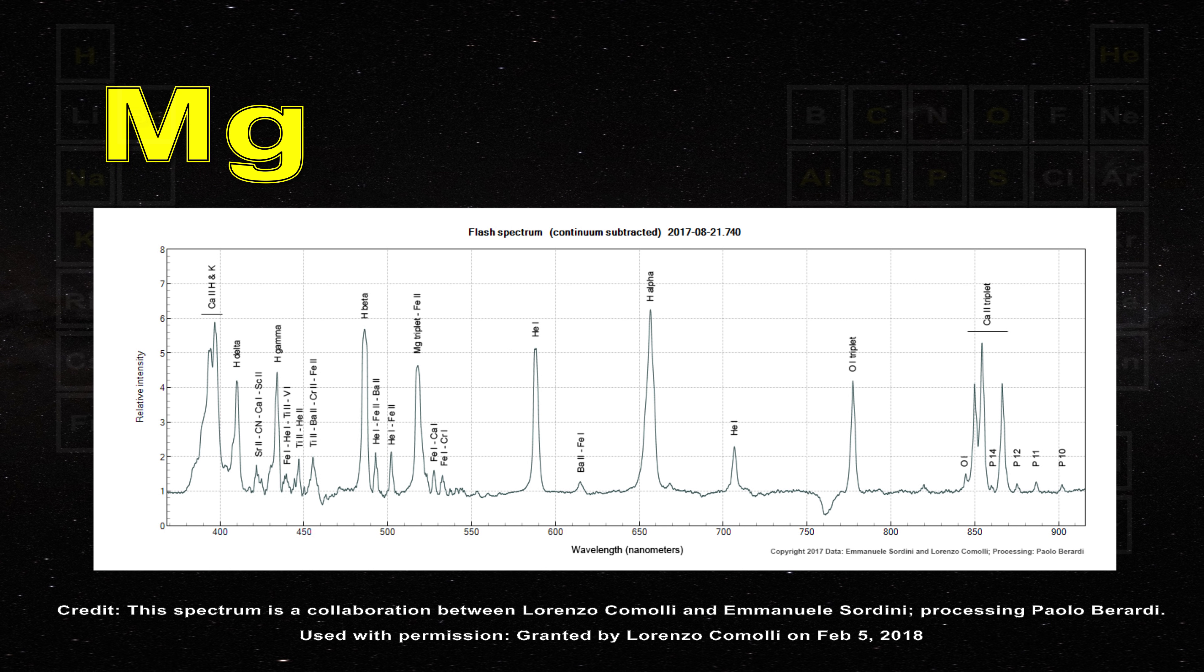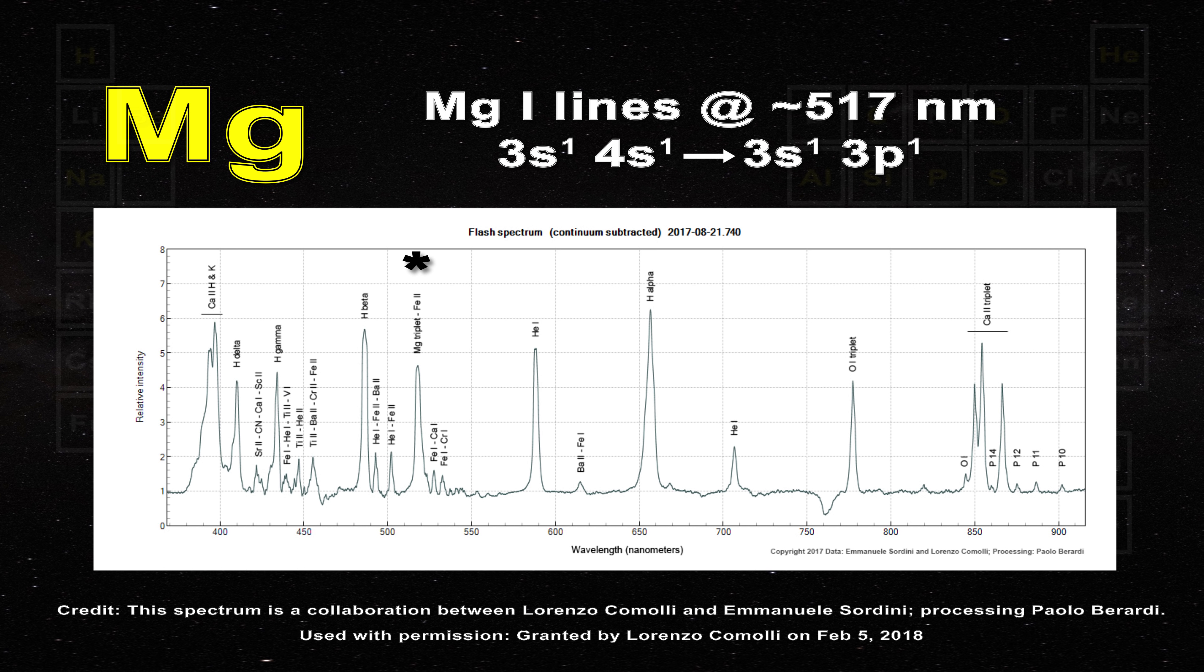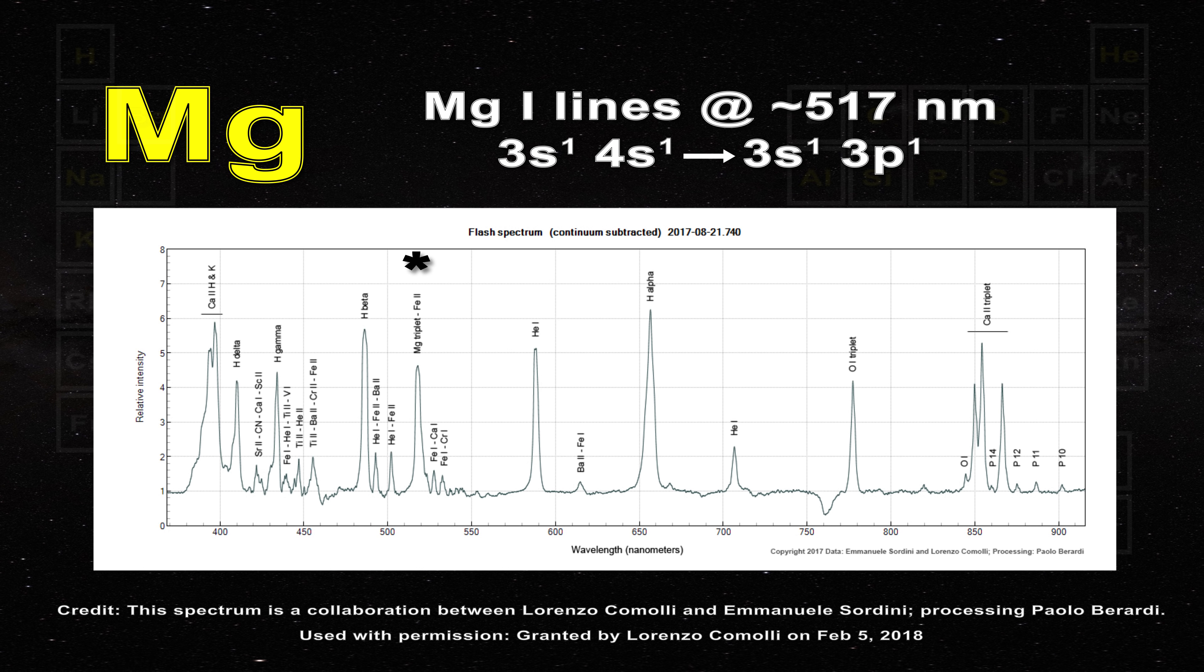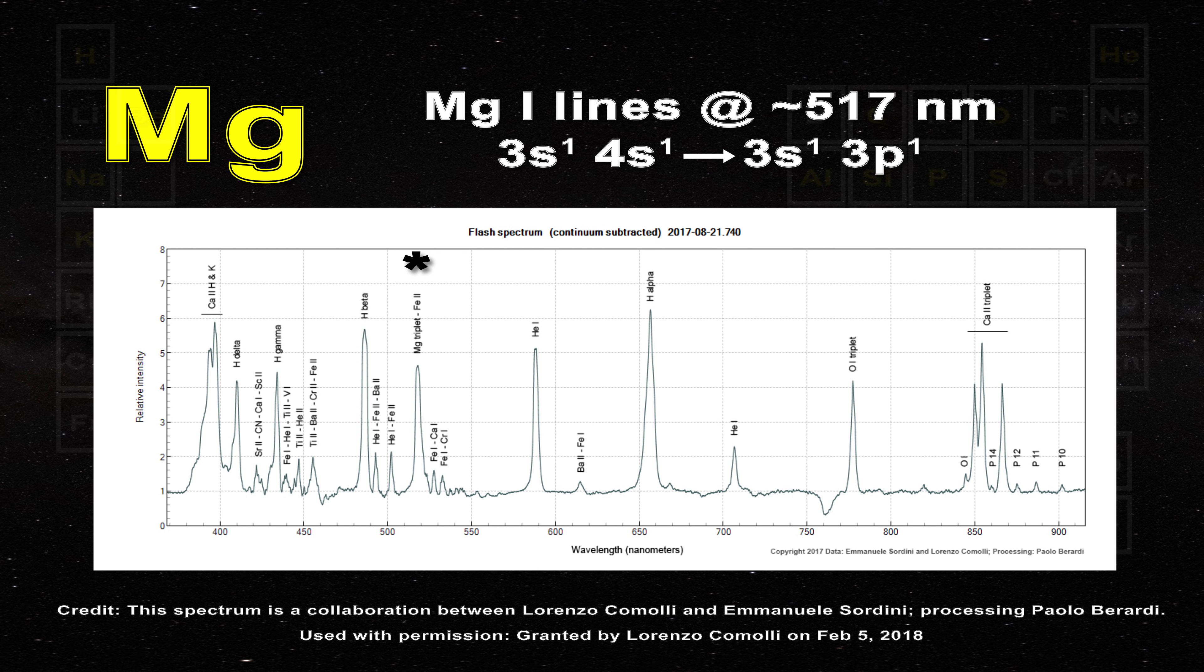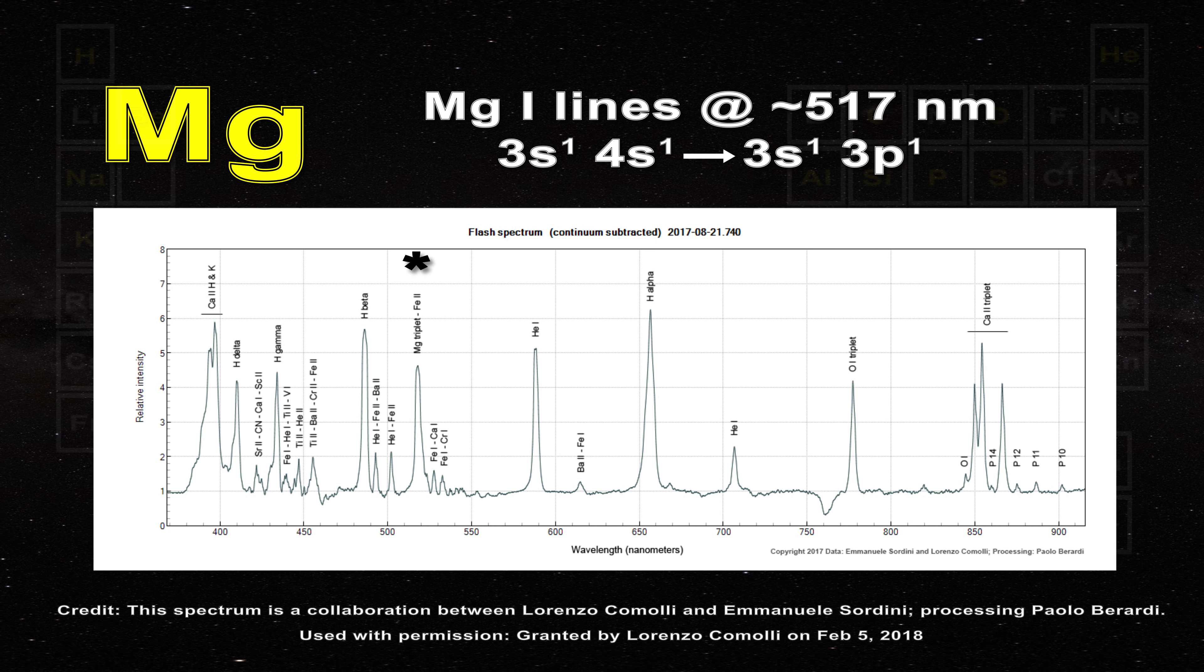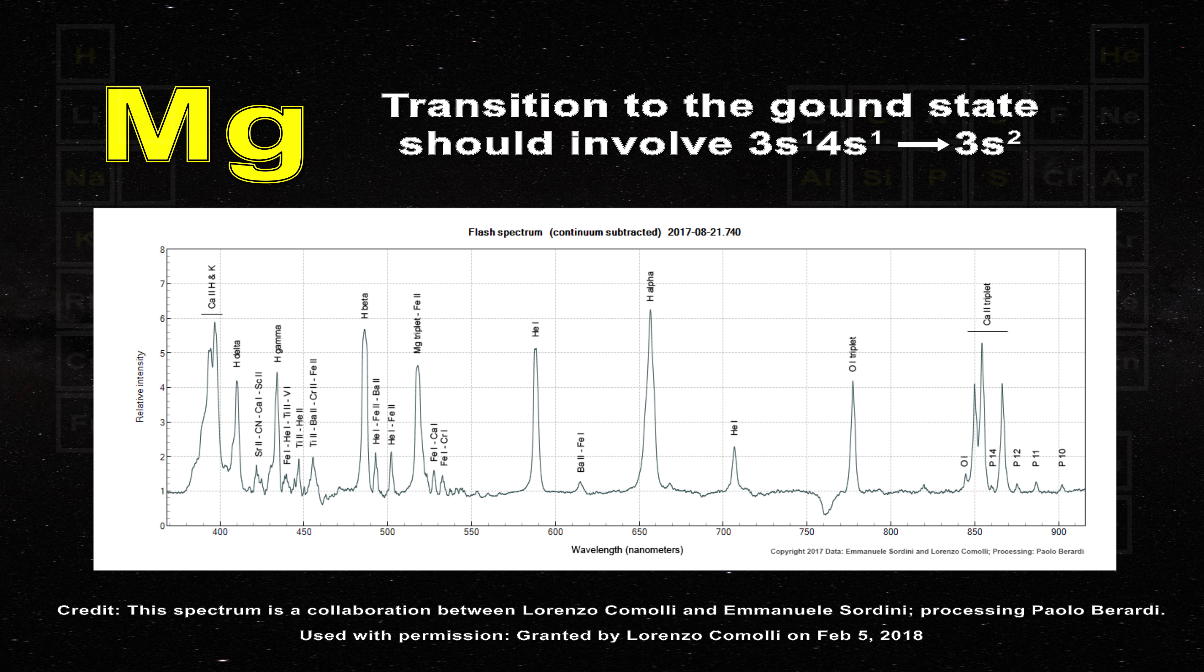The strong magnesium 1 lines are another example. They involve a transition from the 3s 4s state to the 3s 3p state. Note once again that the transition is not to the ground state which should be 3s2. This cannot be an accident.